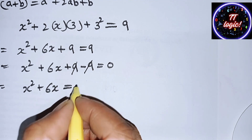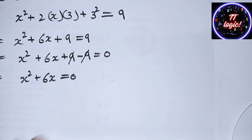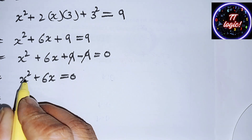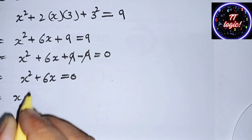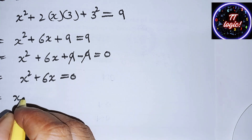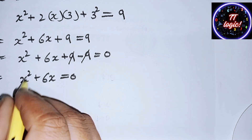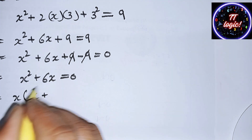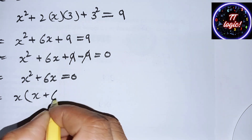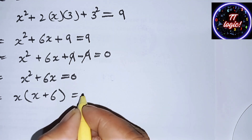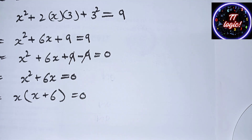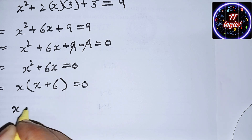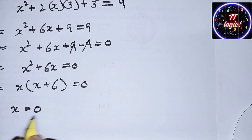The remaining expression is x² + 6x = 0. Now we factor out x from this expression. x divided by x² gives x, and 6x divided by x gives 6, so we write x(x + 6) = 0.